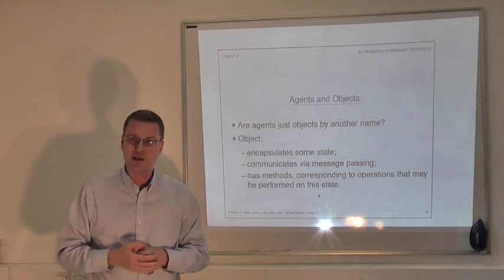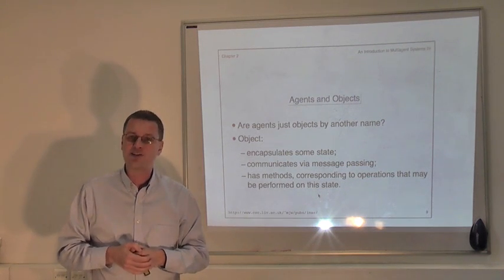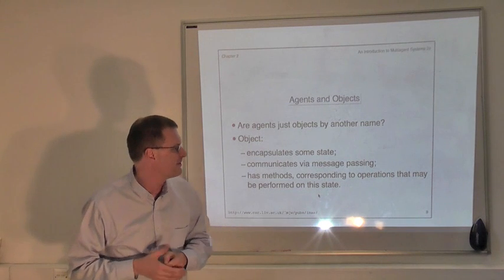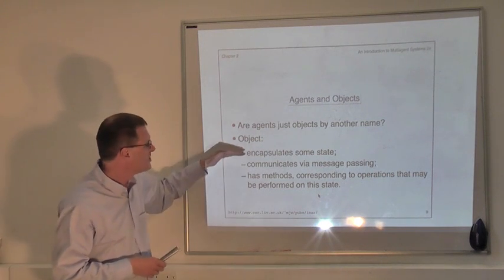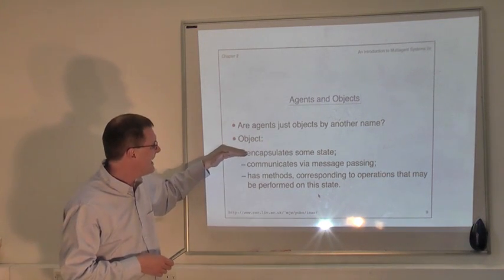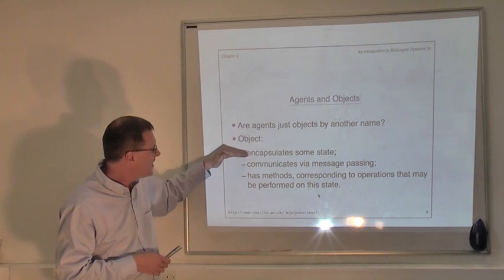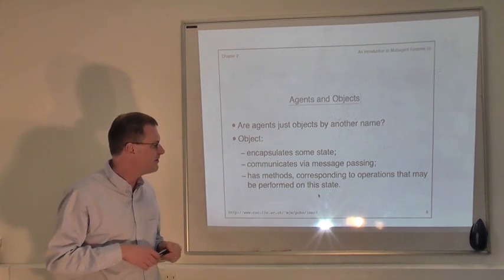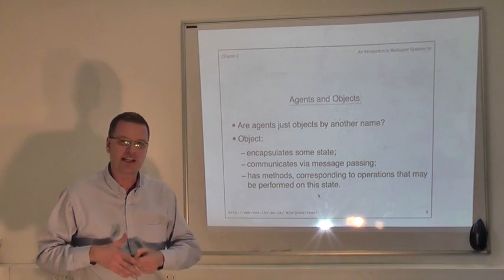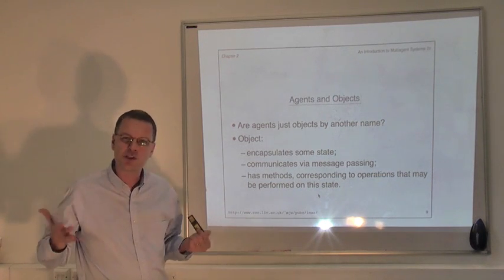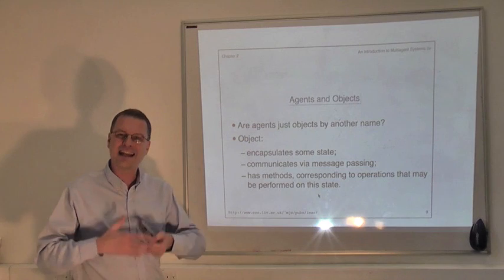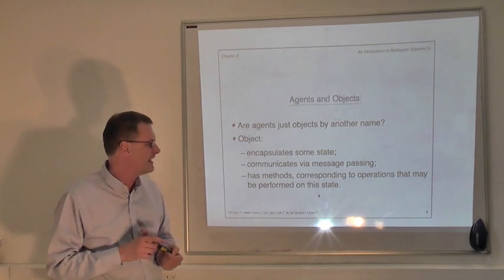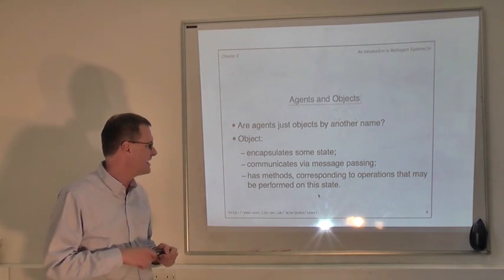It's private to that object. We indicate the state that we encapsulate in Java by using the keyword private. So an object encapsulates some state. One way of describing that is that you can say that an object has some kind of autonomy over its state — it has control over its own state.